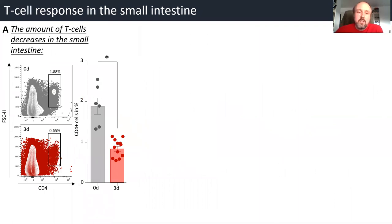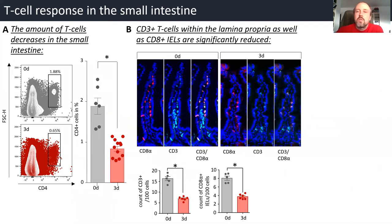Furthermore, we know that the infection of the necrosis arises from the small intestine, so we looked at the T-cell response in the small intestine. We isolated T-cells from the small intestine and performed FACS analysis. During acute pancreatitis, we see a significant reduction of T-cells within the small intestine. Looking at the histology, we also see that cells in the lamina propria and the intraepithelial lymphocytes are significantly reduced during severe acute pancreatitis.